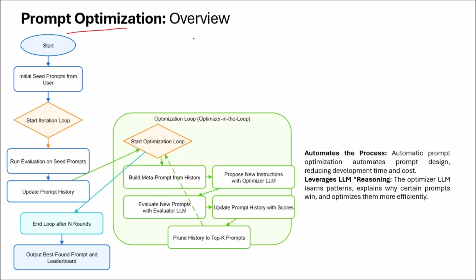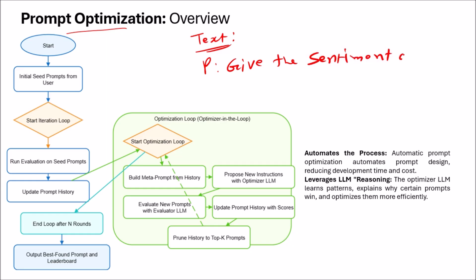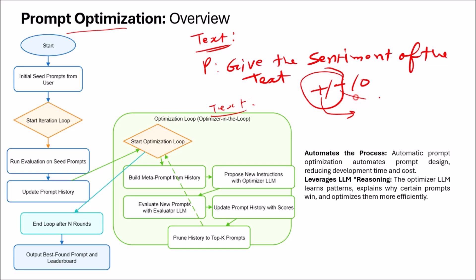Suppose you have an input text and you want the large language model to identify its sentiment. A layman person might write: 'Give the sentiment of the text' or 'Give the sentiment of the following text.' The sentiment classifier may give correct results like positive, negative, or neutral — or it may only return positive/negative, or return extra information. So it may or may not match your exact requirement.